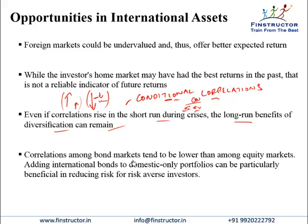Correlation among bond markets tends to be definitely lower than among equity markets. So including international bonds can definitely make sense, even if you argue that equity market correlations are becoming much higher as the world is more integrated. Bond market correlations are still quite low, and adding international bonds to a domestic-only portfolio can be beneficial for diversification and reducing risk.